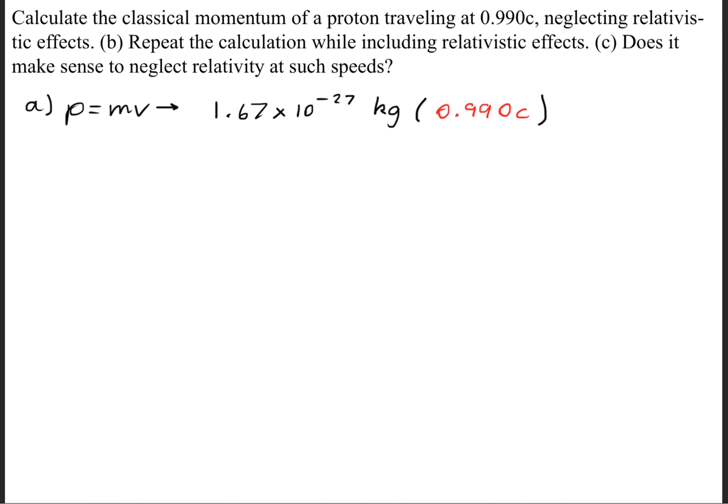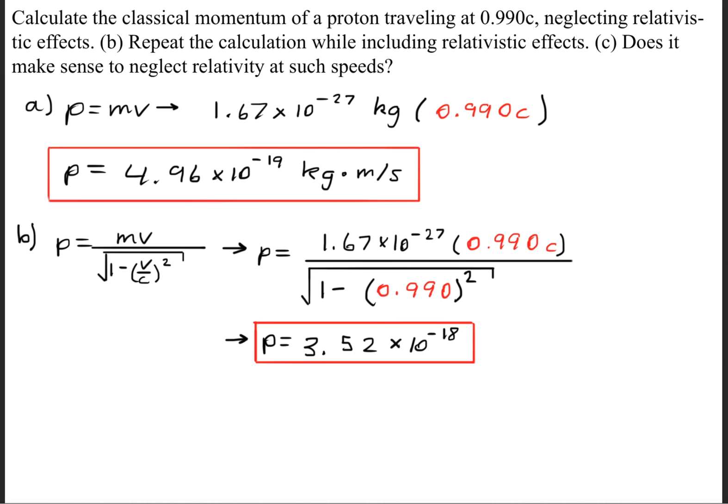Now the mass of a proton is 1.67 times 10 to the negative 27th kilograms. This proton is traveling at 0.990 times the speed of light. So when we go ahead and solve this, we'll get that the momentum is 4.96 times 10 to the negative 19th kilogram meters per second.